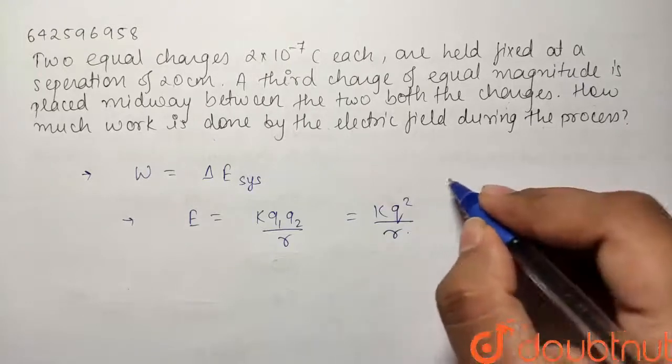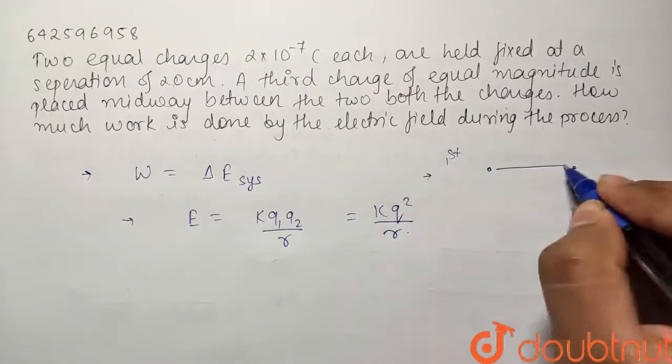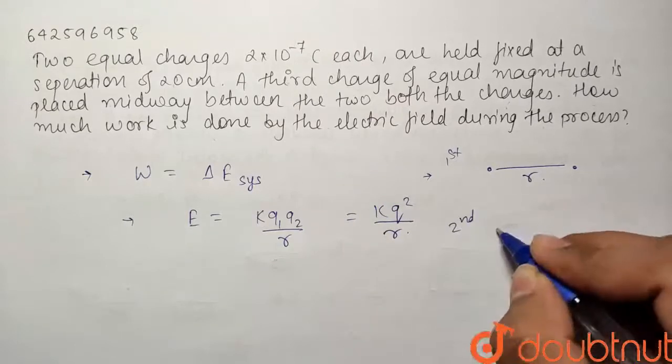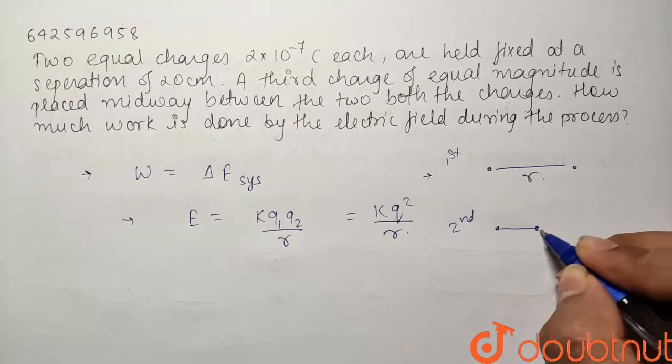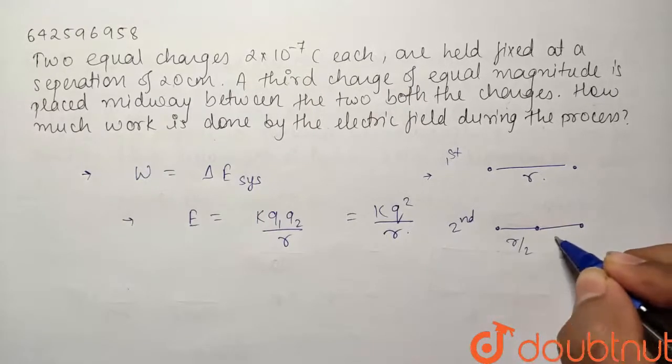So in the first scenario, we have both the charges and the separation between them is equal to R. And in the second scenario, we have placed the charge midway between them, that is at R/2 from both the charges. So this is the final situation.